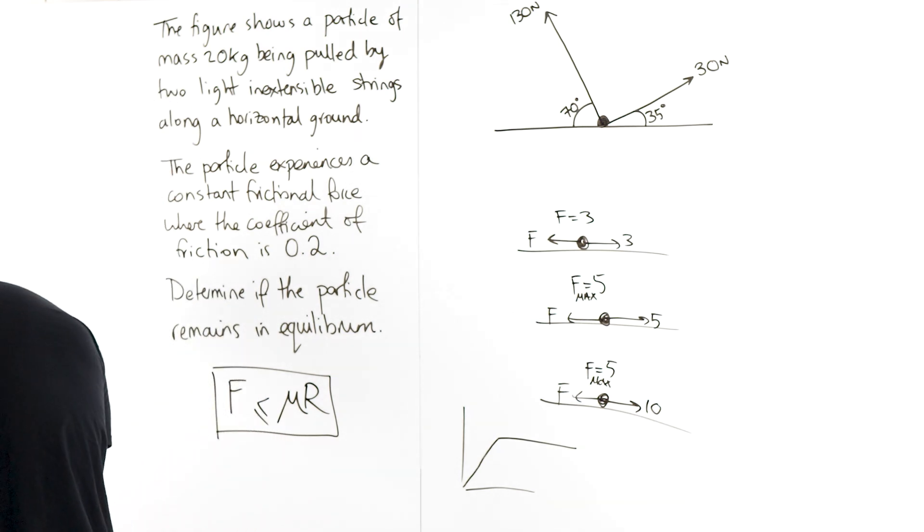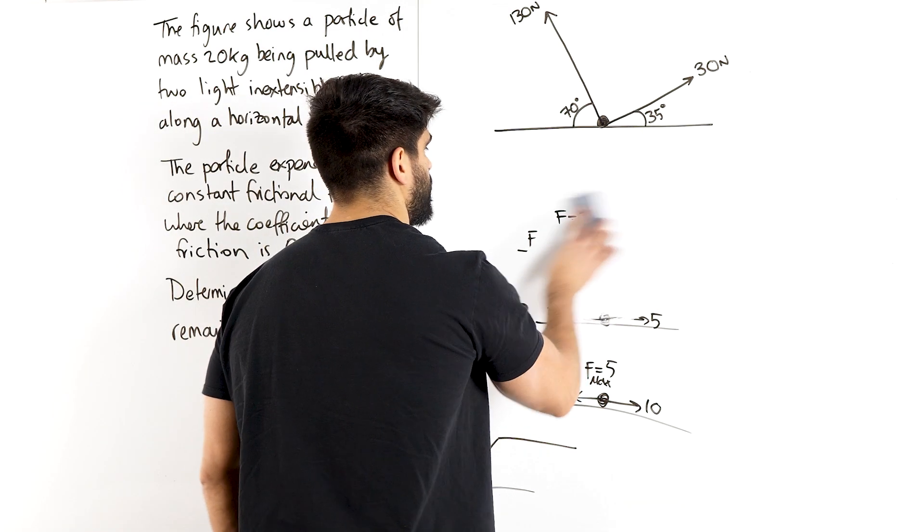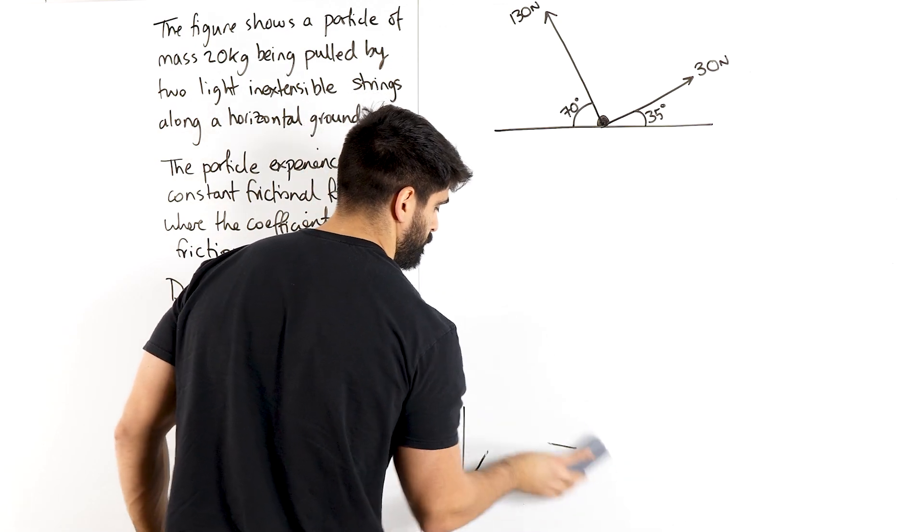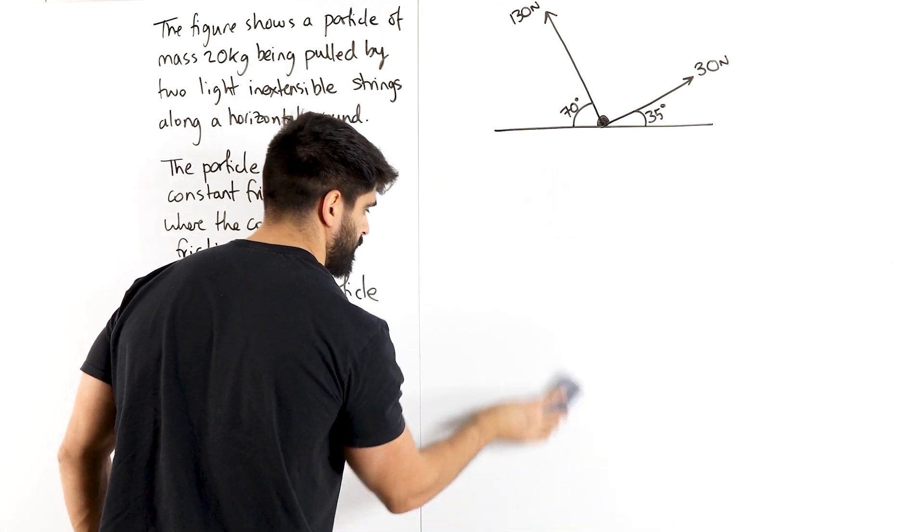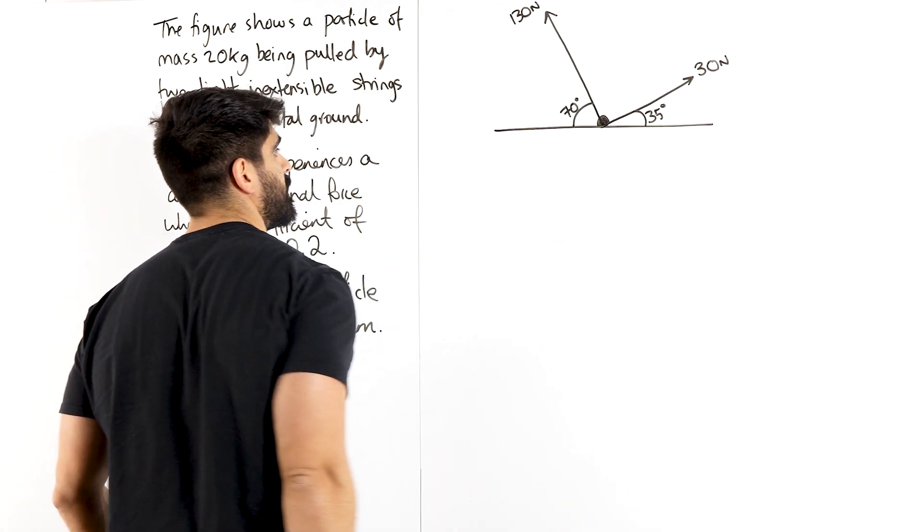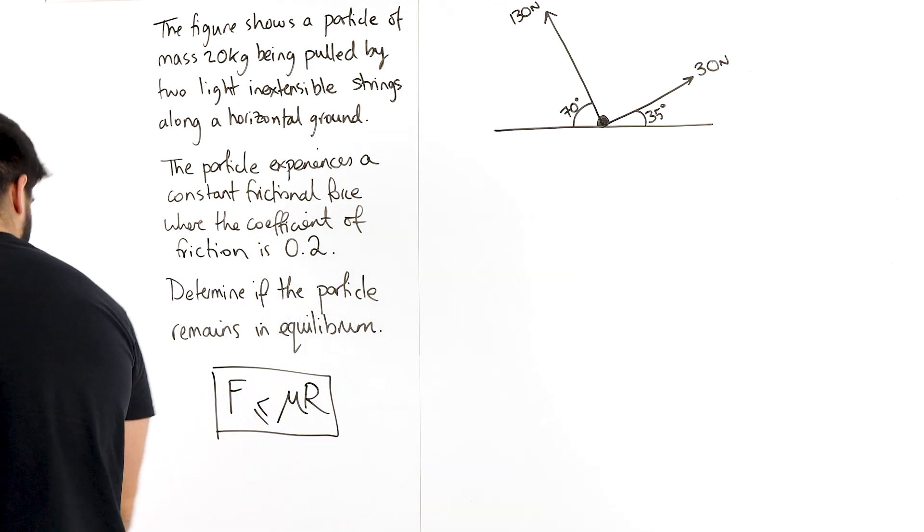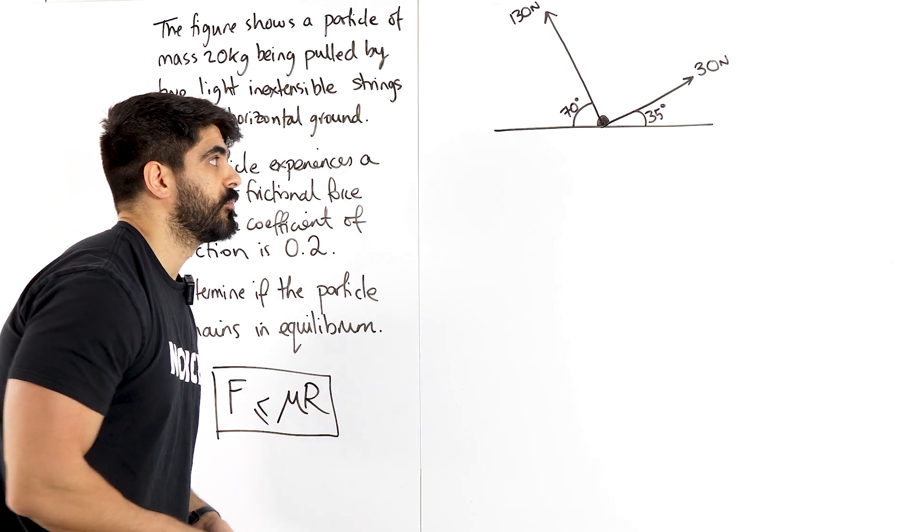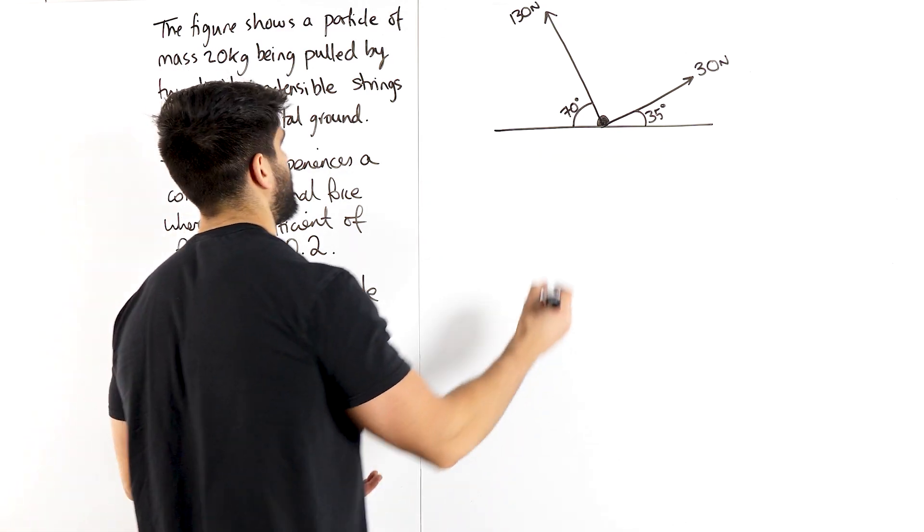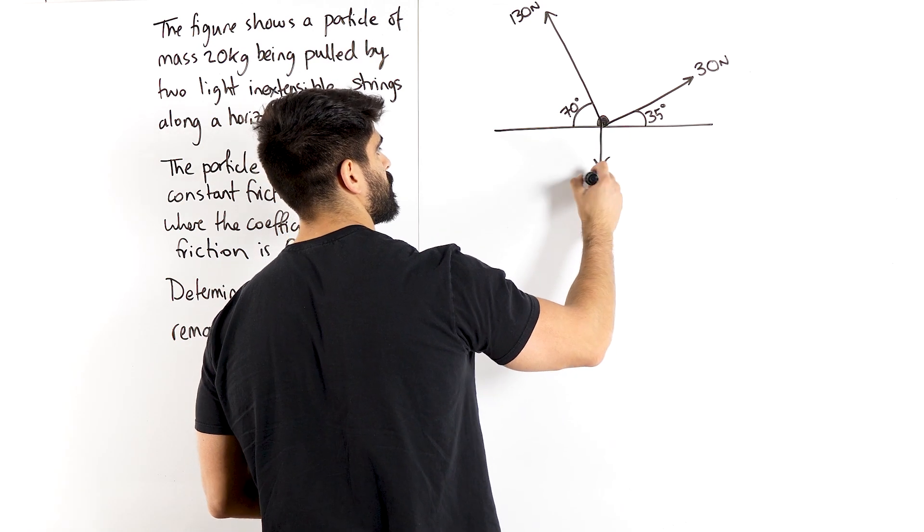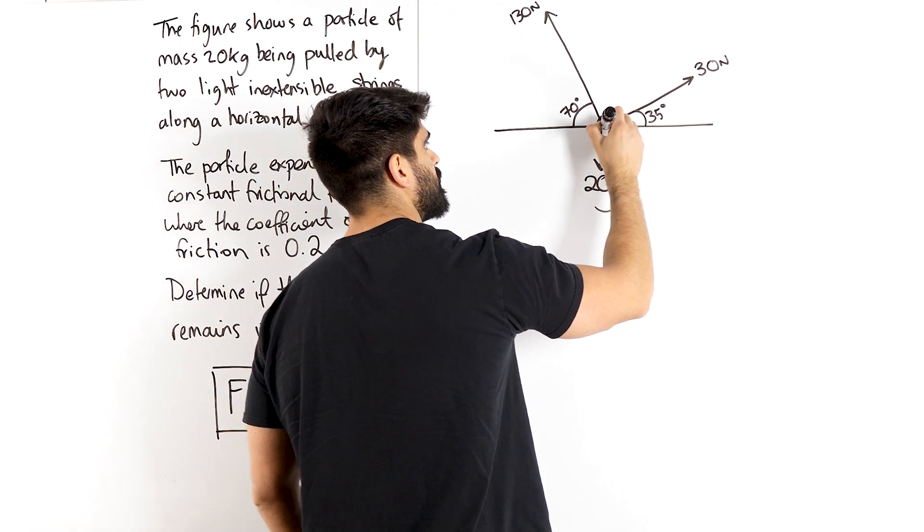All right, let's start answering the question. I thought you guys have some context behind how friction works. This is a great question for you guys to understand friction in a lot more detail. So we have that this mass is 20 kg, so 20 g. And obviously we need to resolve our forces. We're pretty well conditioned for that now.